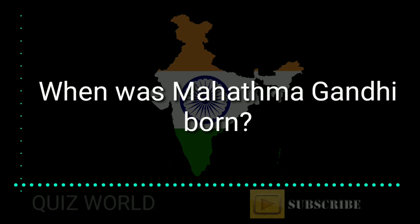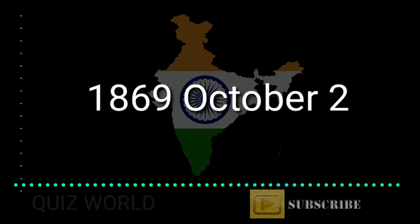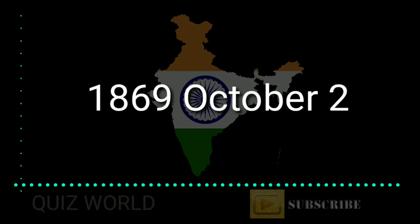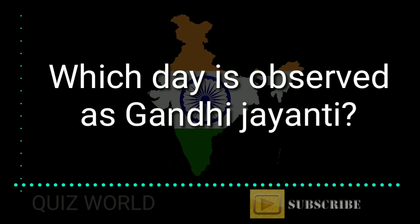When was Mahatma Gandhi born? Answer is 1869, October 2nd.